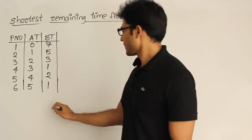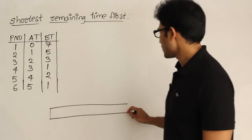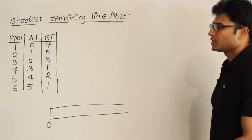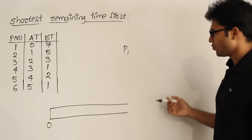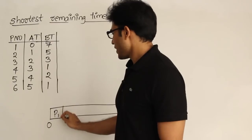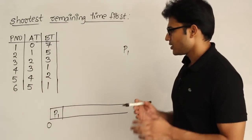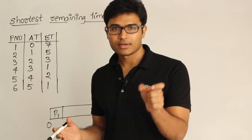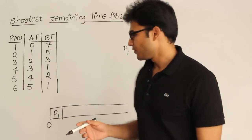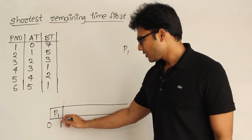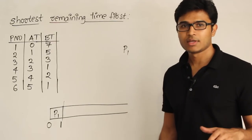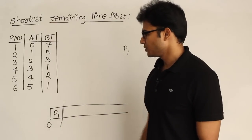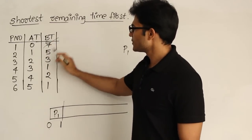Let's go through an example. I am going to start at time t=0, and at that time only one process is available, which is P1. So at time 0 only P1 is available, I have no other option, therefore I am going to schedule P1. Once I schedule P1, I will not run it to completion. Instead, I stop it at every one unit of time to check if any other process has arrived. Since I executed P1 for one unit, its remaining time is reduced to 6.